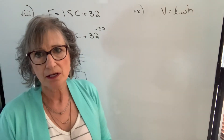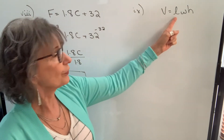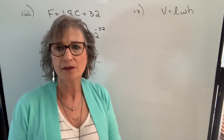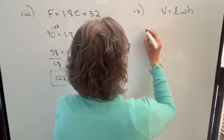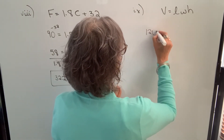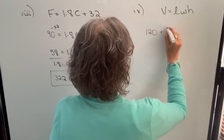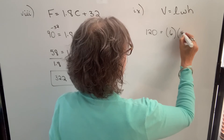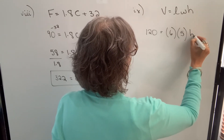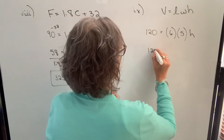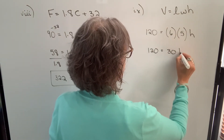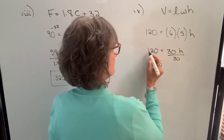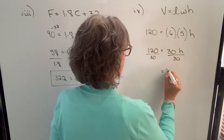Formulas can have more than two variables. For volume of a rectangular solid — V equals L times W times H — if volume is 120, length is 6, and width is 5, we want to find height H. We multiply 5 times 6 to get 30, so we have 30 times H equals 120. Dividing both sides by 30, we get H equals 4.